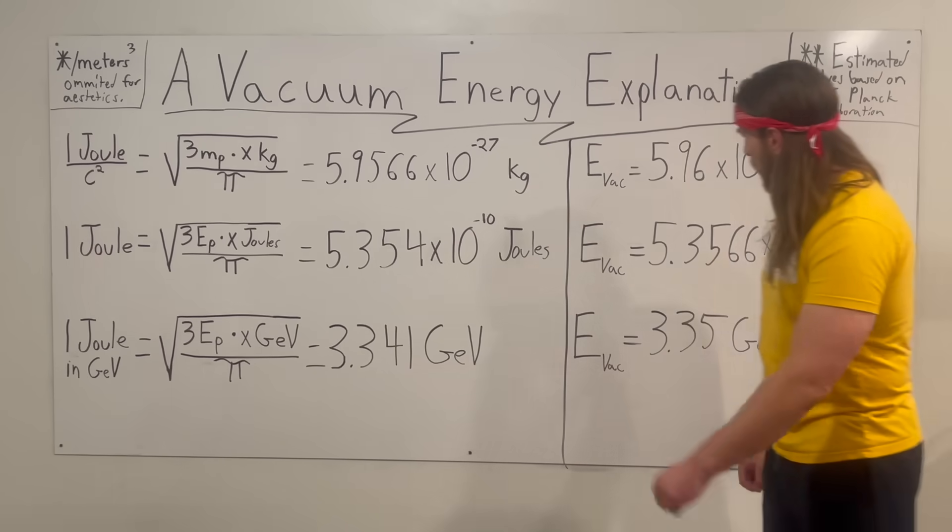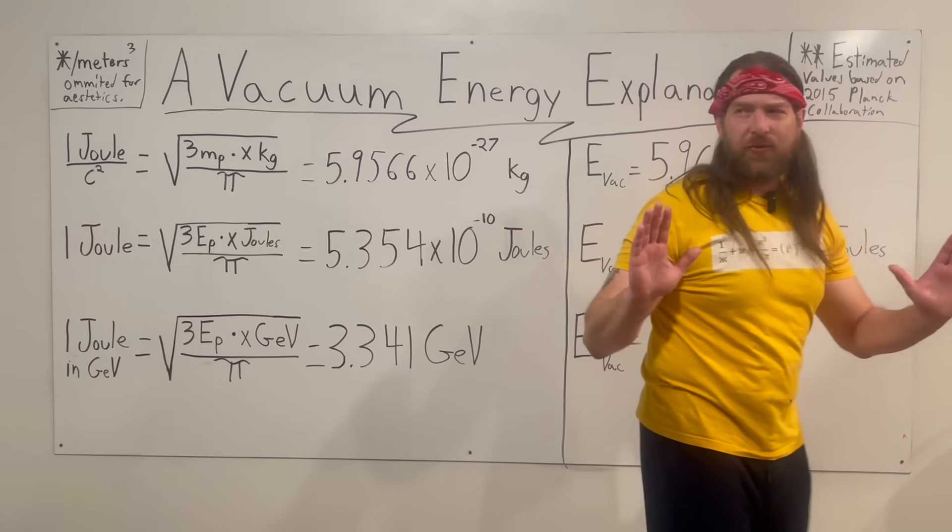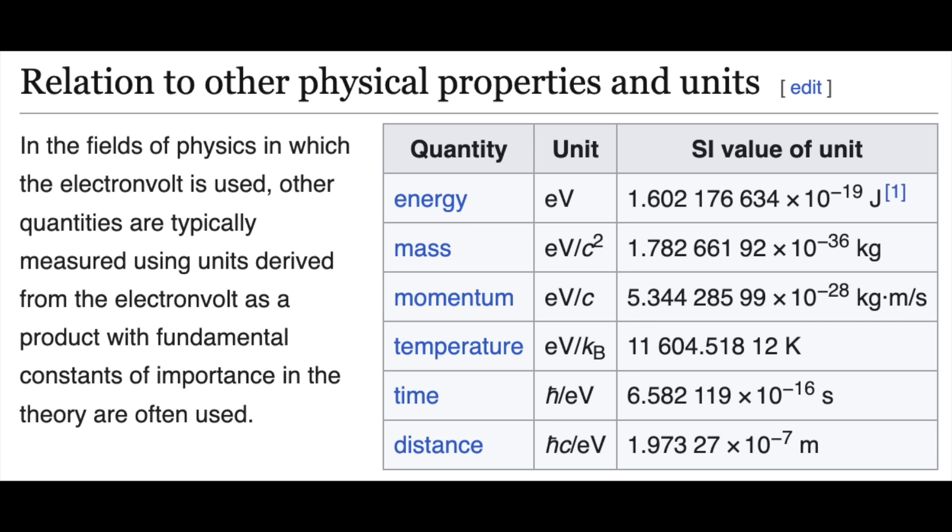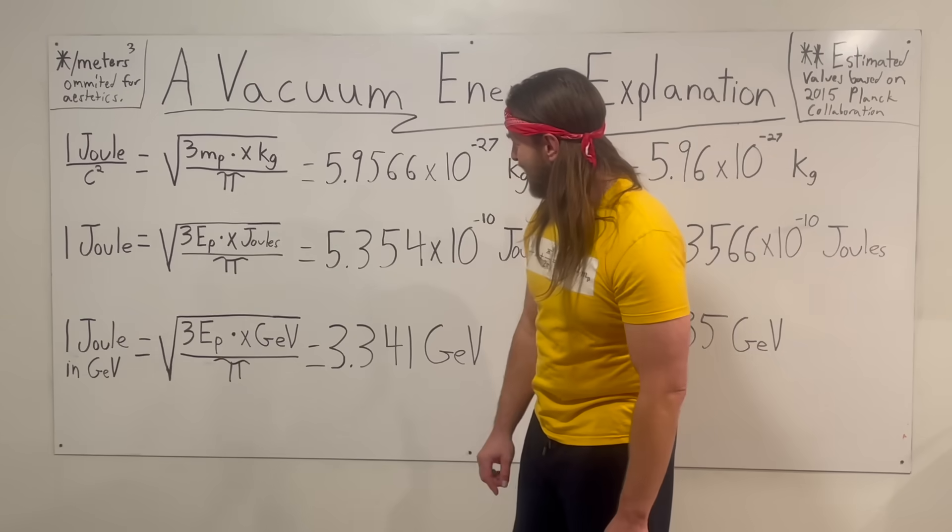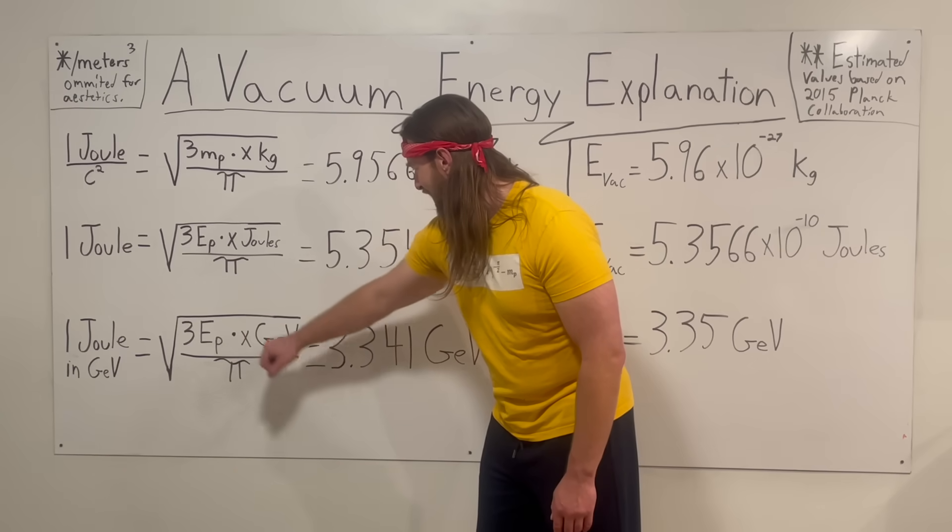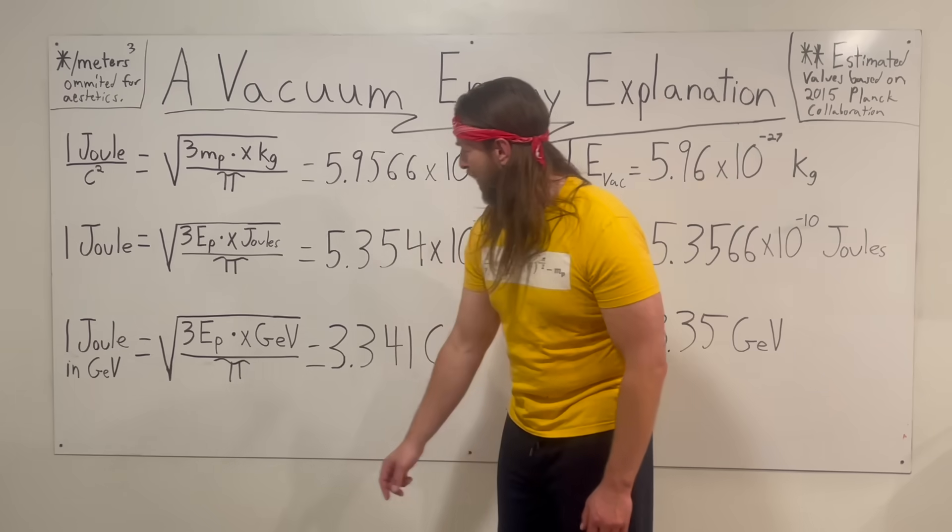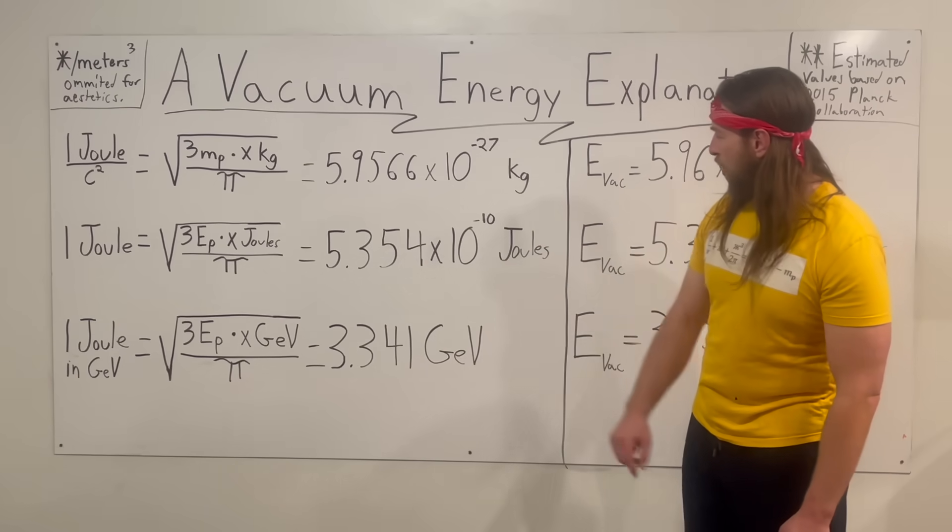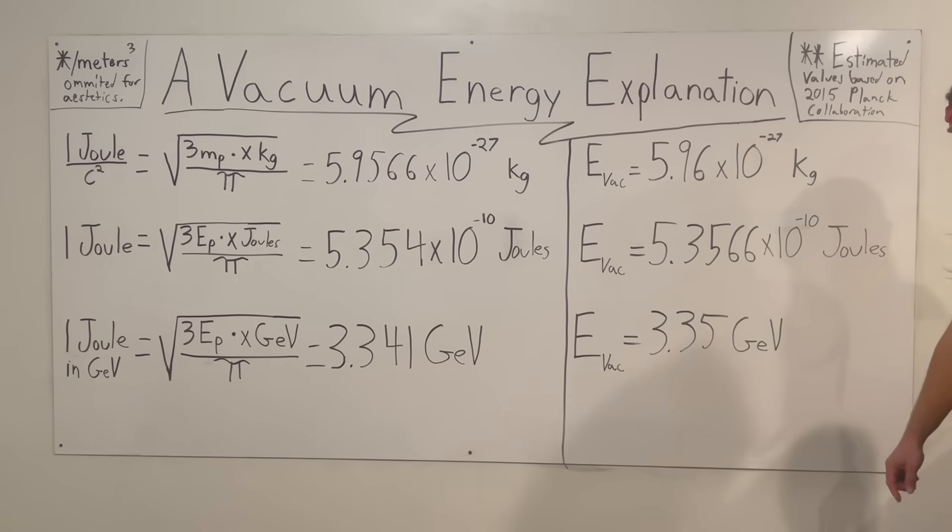How about GeV? We can apparently use electron volts to express anything like lengths and masses. We take one joule—you can literally write it in Wolfram Alpha like this: one joule in GeV. Then you take the geometric mean of these two numbers: three Planck energies times X in GeV, divided by pi within our root. You get 3.341 GeV. What's our estimated number here? 3.35 GeV.